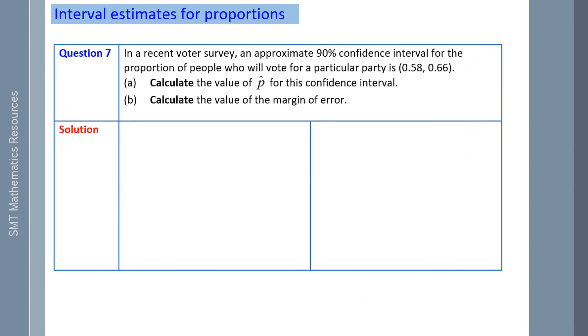In a recent voter survey, an approximate 90% confidence interval for the proportion of people who have voted for a particular party is between 58% and 66%. Calculate the value for P, which is the sample proportion of successes for this confidence interval.